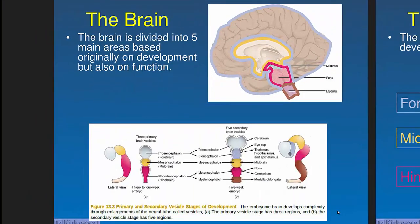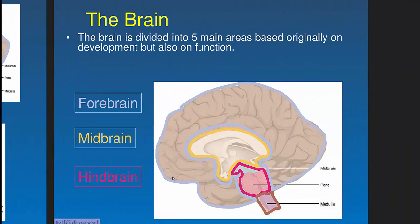We don't do a lot of developmental anatomy, but it's helpful for understanding the brain because structures follow development. In a two-to-four week embryo, three bulges become the forebrain, midbrain, and rhombencephalon (hindbrain). By five weeks, it delineates further into the telencephalon and diencephalon as part of the forebrain, the mesencephalon as the midbrain, and the rhombencephalon — pons, cerebellum, and medulla — as the hindbrain.